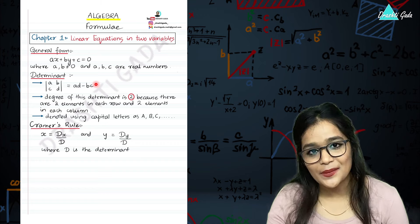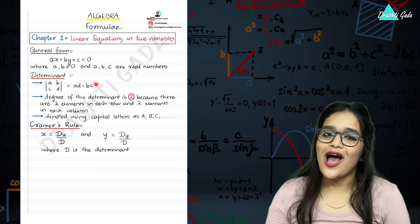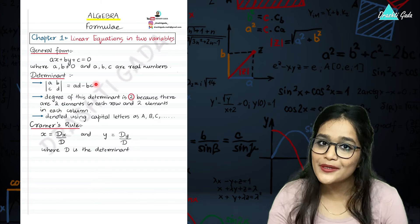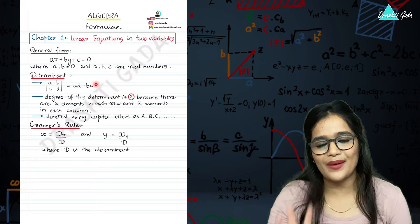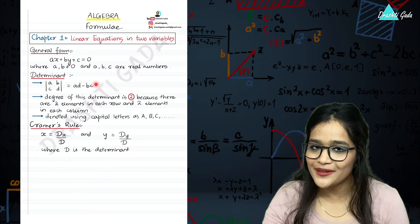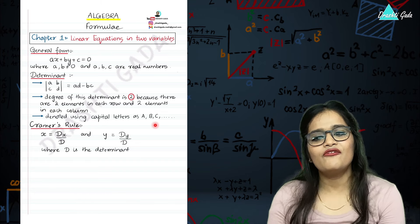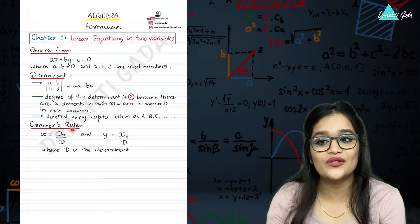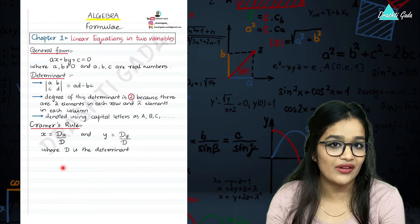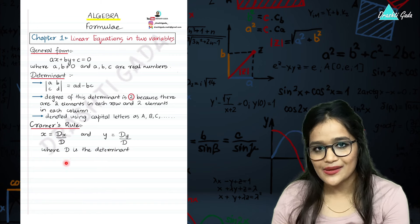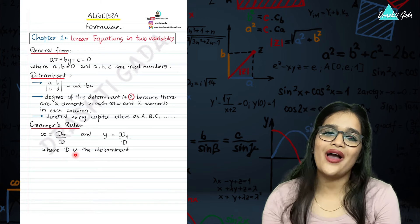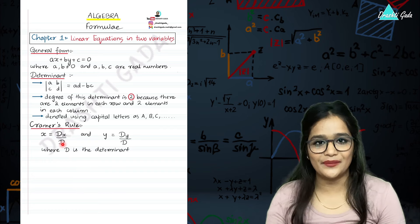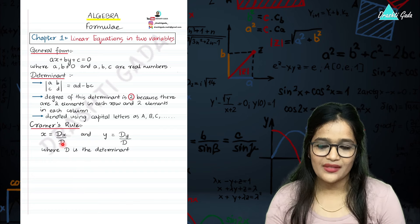The third thing from this chapter is how to solve linear equations using Cramer's Rule. For Cramer's Rule, you first calculate the determinant D, and then calculate the values of x and y using the formula: x is equal to Dx upon D, and y is equal to Dy upon D. The capital D is the determinant.